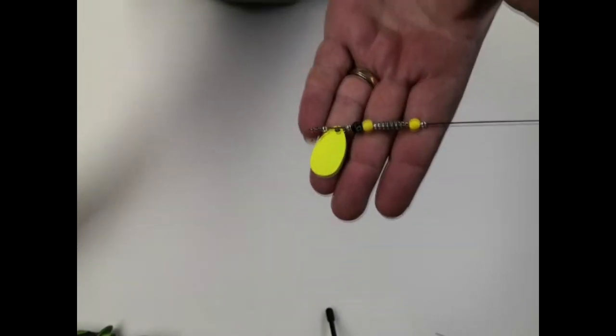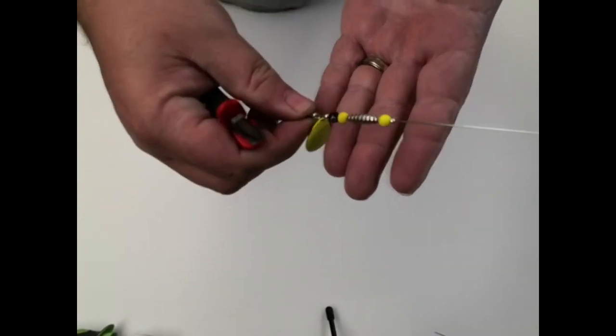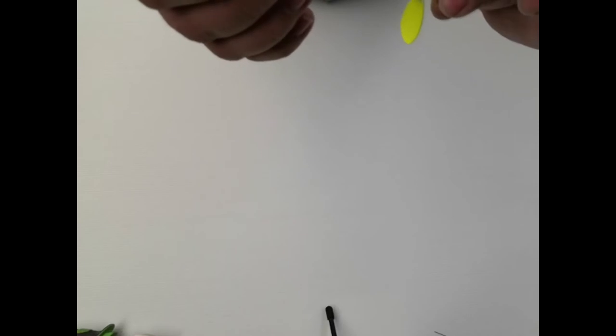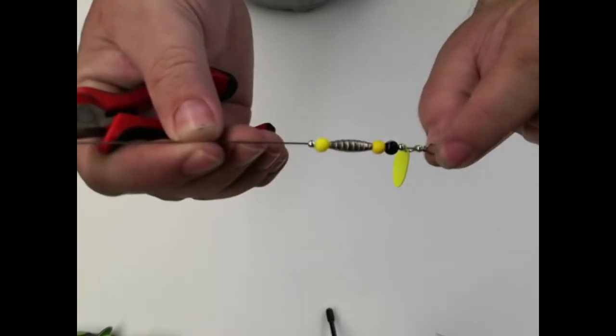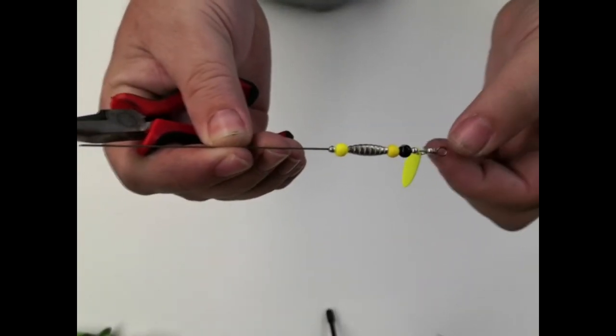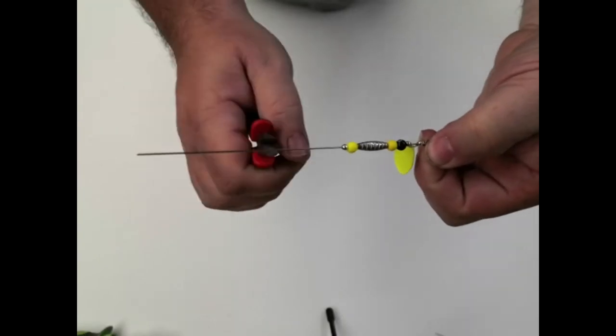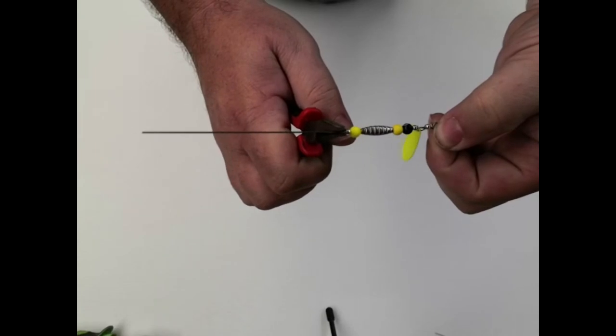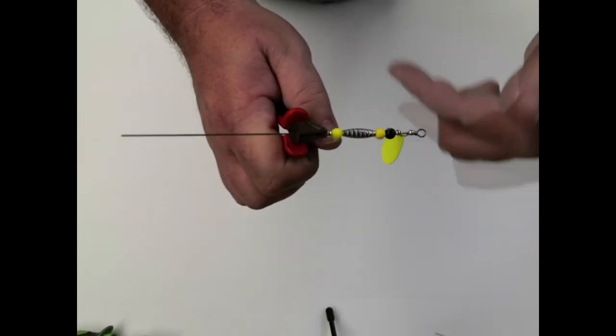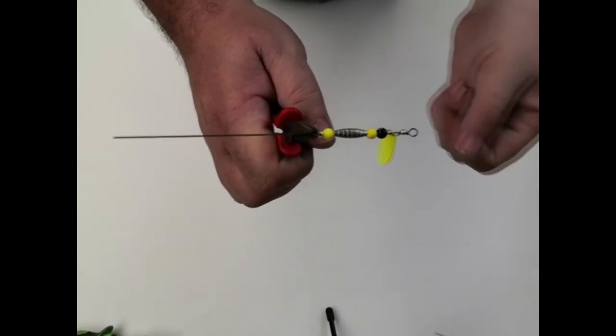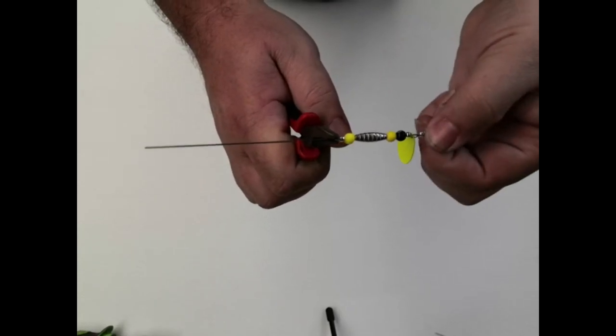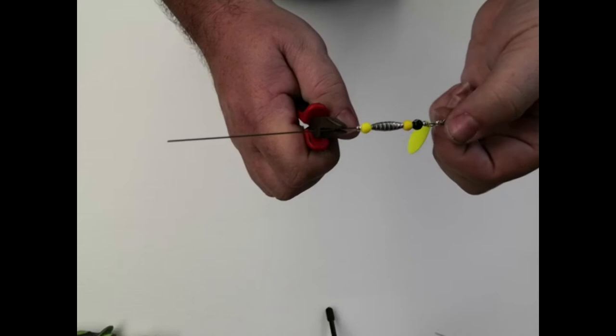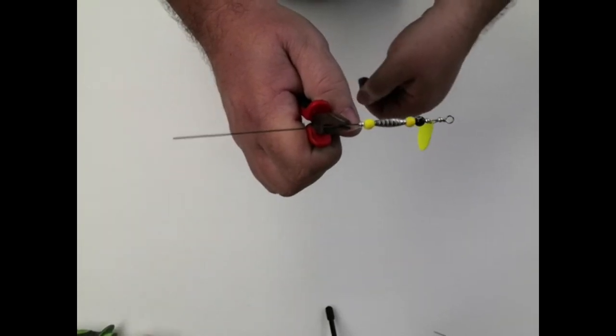So from here it's really simple steps. All you need to do is basically finish off with another one of these loops. Generally I like to set it back a little bit. If you set it too close, what happens is this is all tight and then your clevis and your blade won't free spin. So I normally like to set it back about four or five maybe six or seven millimeters. Okay that seems like a really good spot.